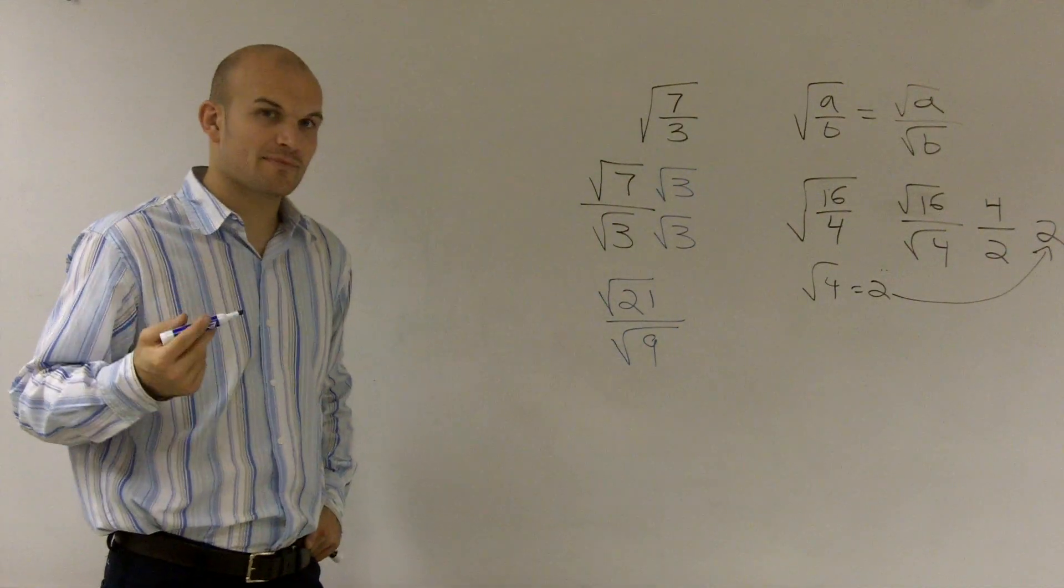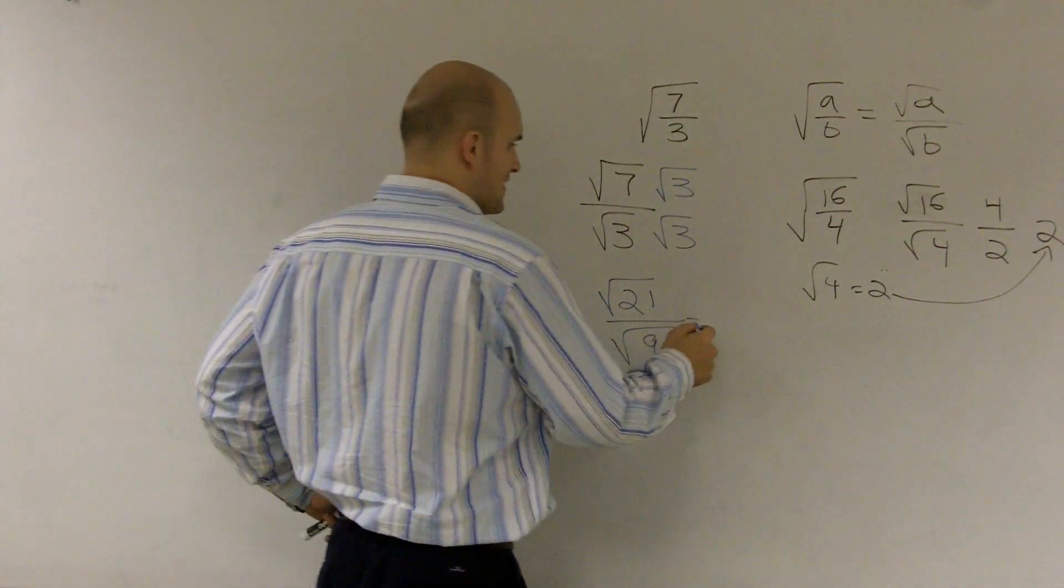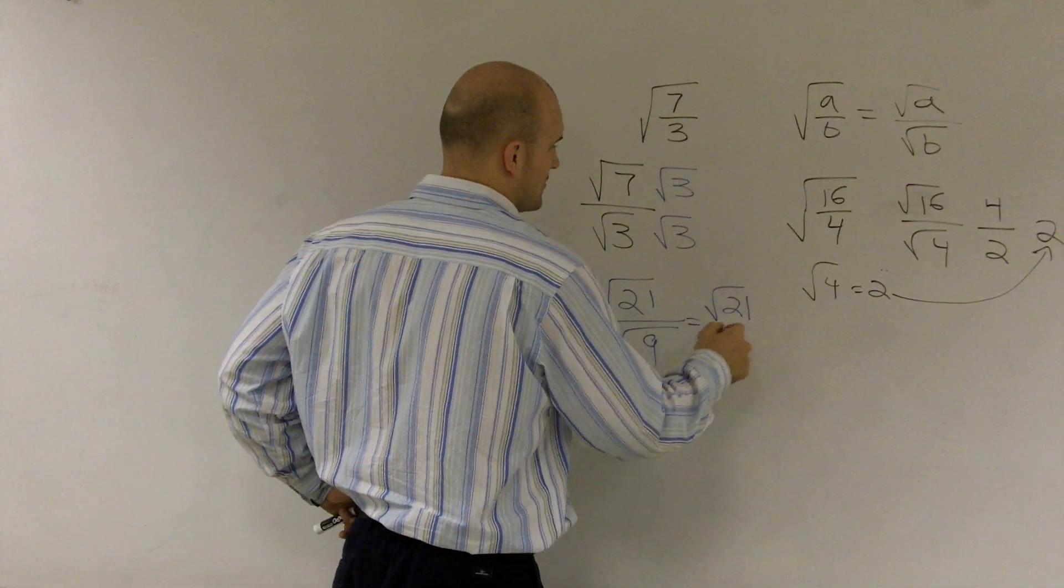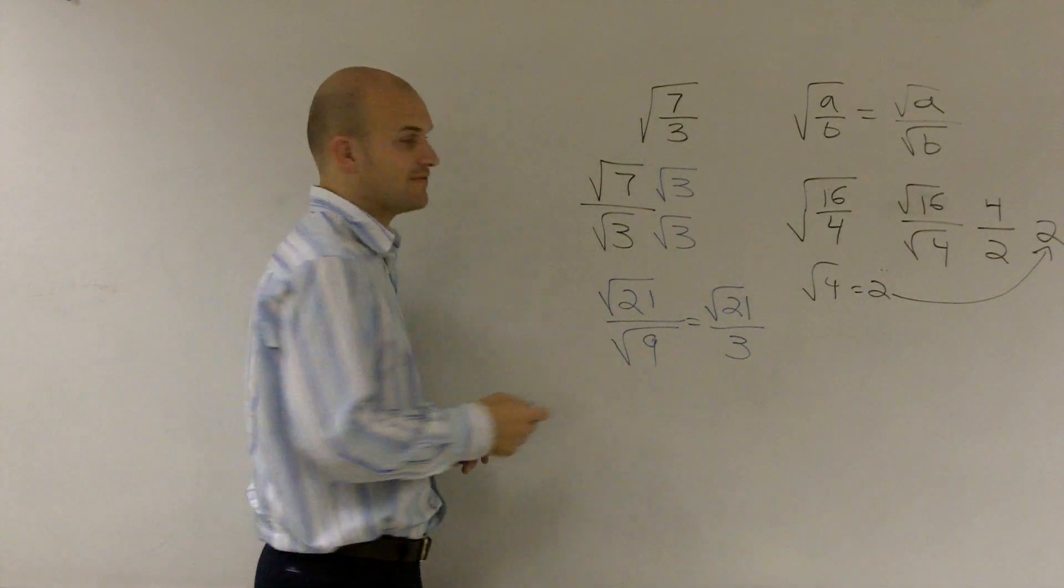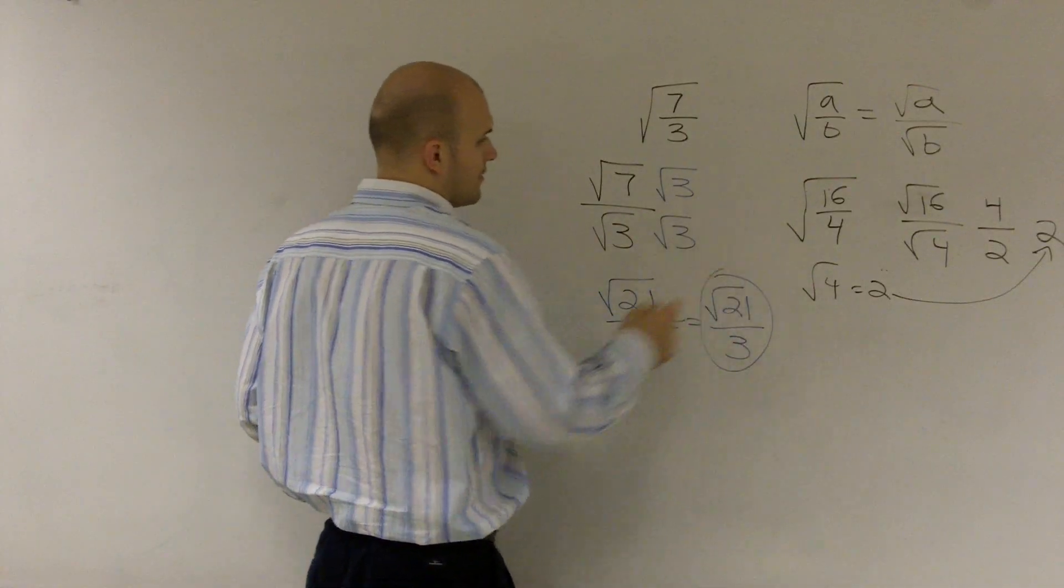and the square root of 21, I look, can I simplify this at all, and I can't. So my final answer is square root of 21 over 3. So that is how you simplify an answer.